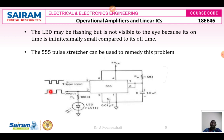The duration of the pulse width depends upon resistance RA and capacitance C connected between pin number 7 (discharge transistor), threshold voltage, and ground terminal. This is how the 555 timer acts as a pulse stretcher. Thank you.